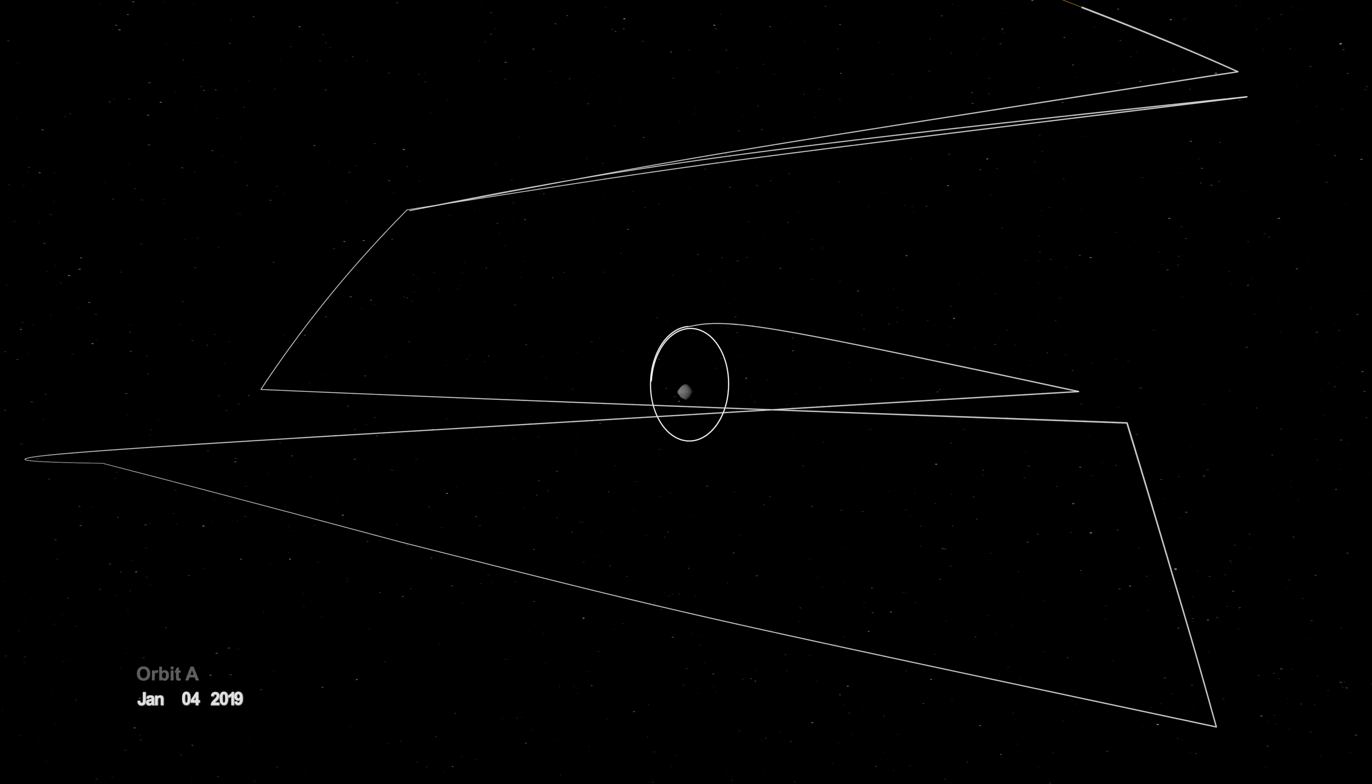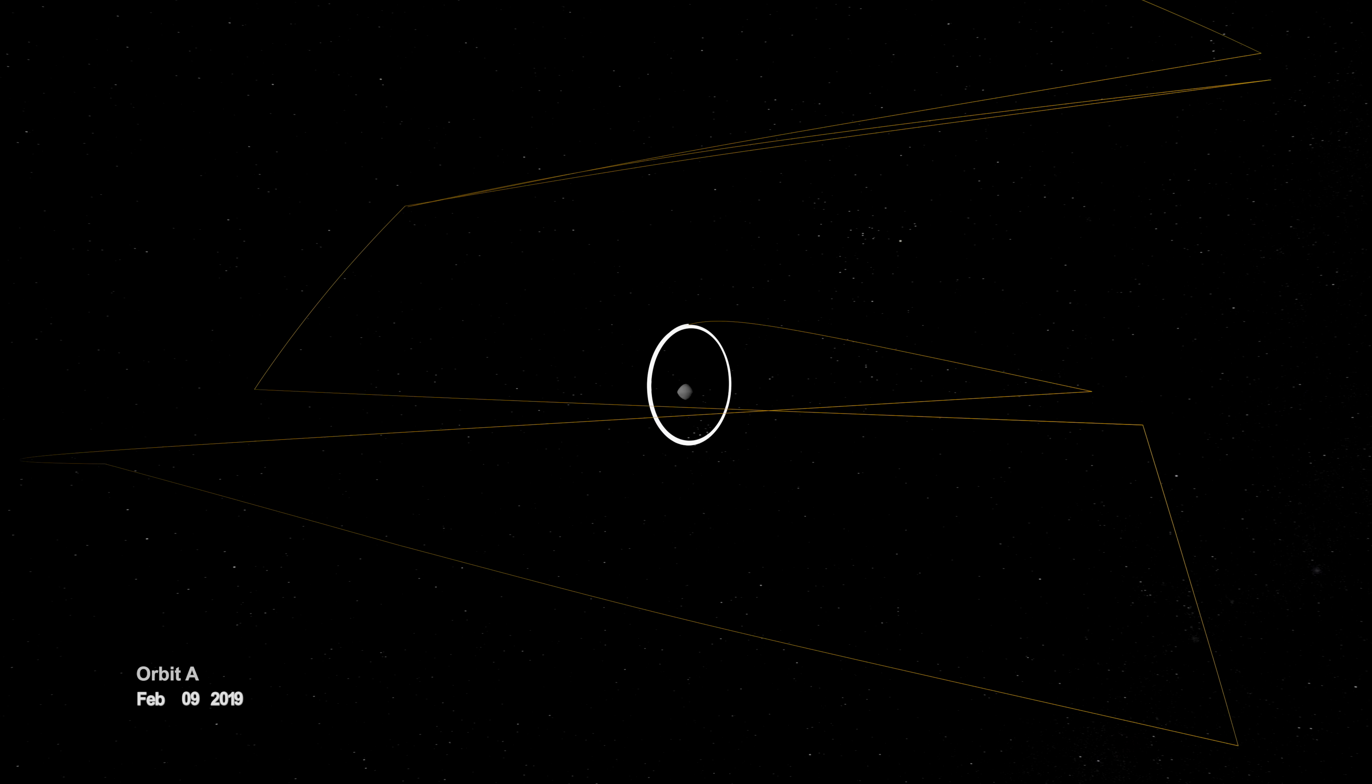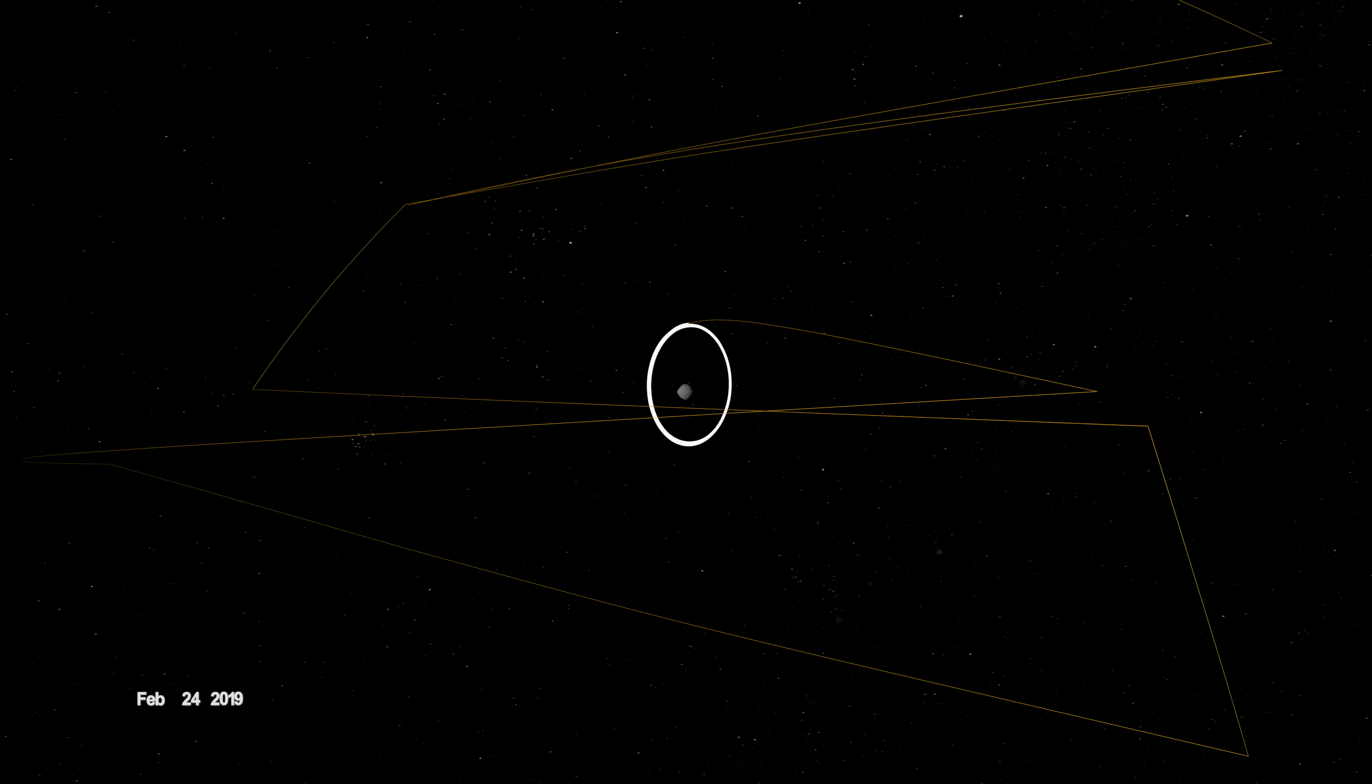On New Year's Eve, OSIRIS-REx was captured into orbit by Bennu's minuscule gravity, making it the smallest world ever to be orbited by a spacecraft.